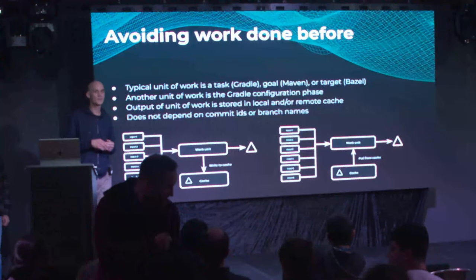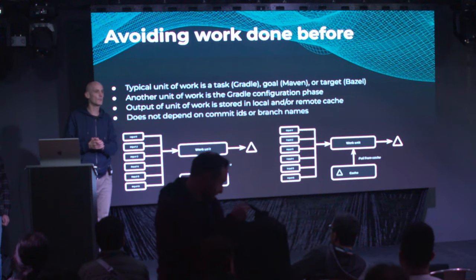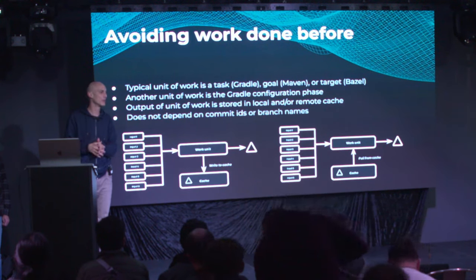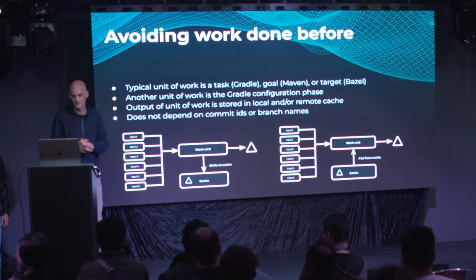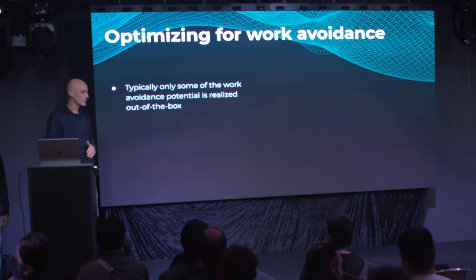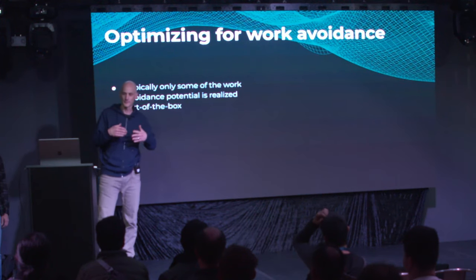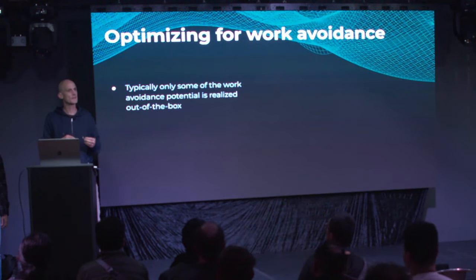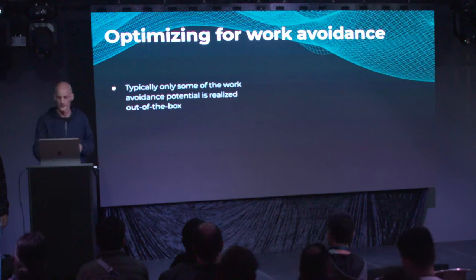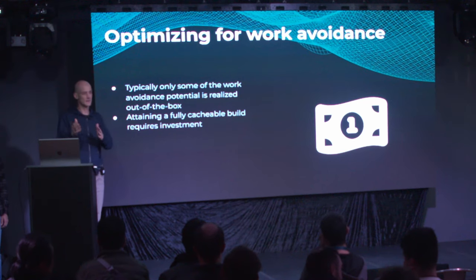What typically doesn't work well is basing the unit of work on a commit ID or branch name, because it's very coarse-grained. The more coarse-grained it is, the more sensitive it is to cache invalidations. When you turn on build caching, you get some savings, but typically not the maximum. Sometimes people expect it to be a magic bullet, but often you get significant savings already — and you can go further with a little bit of investment.